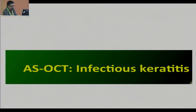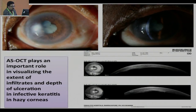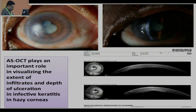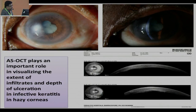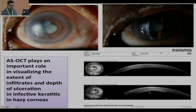Now I will discuss clinical-oriented practice. The anterior segment OCT plays an important role in visualizing the extent of infiltrates and depth of ulceration of infectious keratitis in hazy corneas. This patient had a thorn injury and was initially KOH-positive for fungal filaments. The infiltrate appeared healed, but on anterior segment OCT we could see dense exudates in the deep stromal layer. That patient ultimately received intrastromal injection of amphotericin B and then improved.